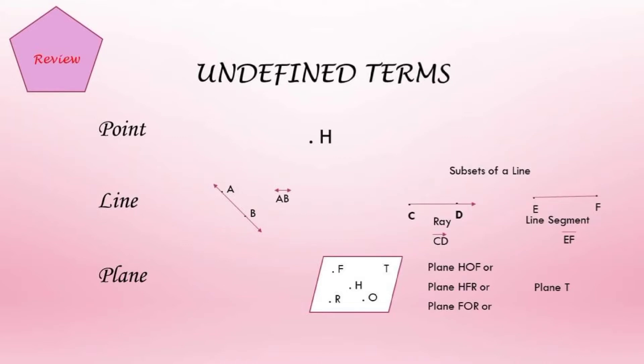We have the point. A point is represented by a dot and it is named by a capital letter. Next, we have the line. A line is a straight line with an infinite length on both directions. It is named by two letters with a line symbol on top of the two letters.